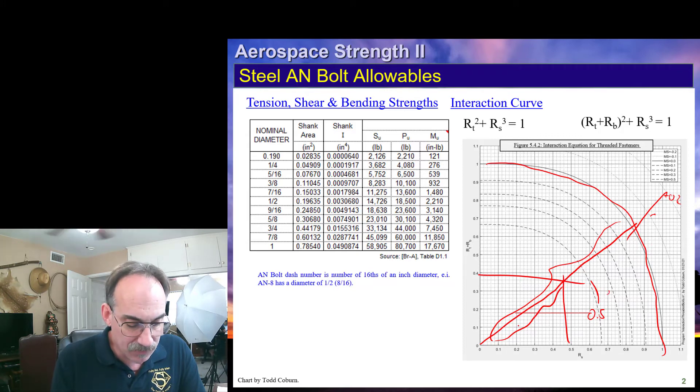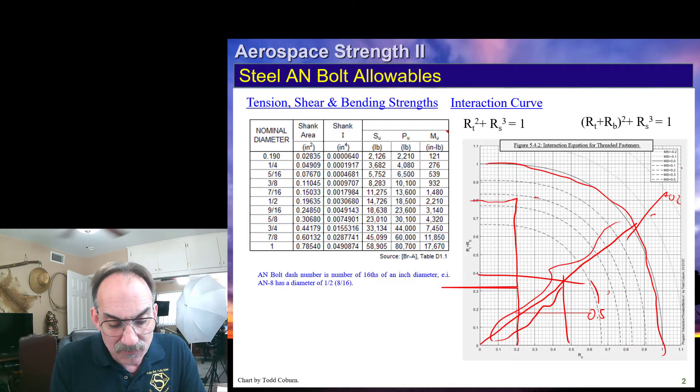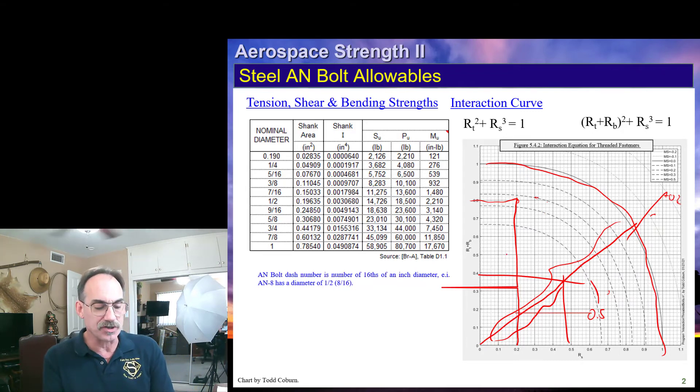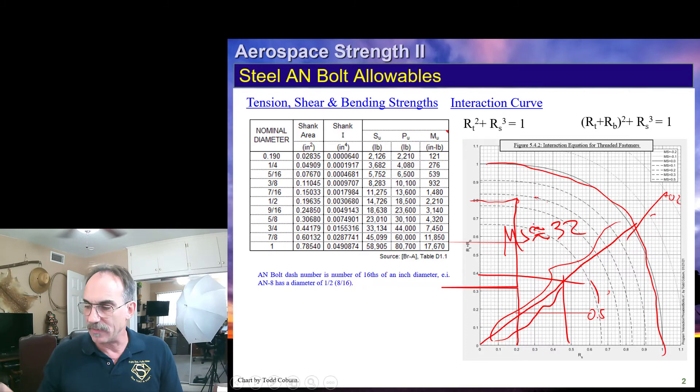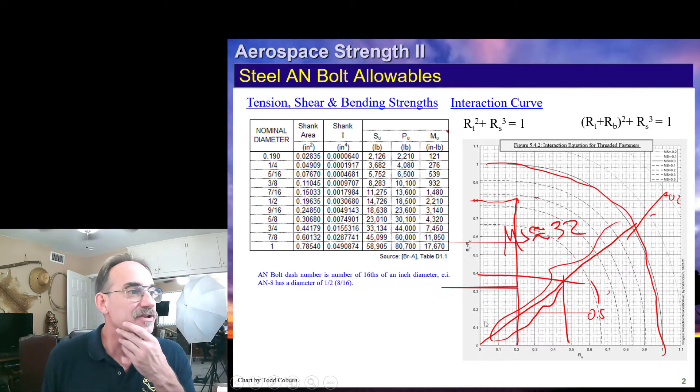Or, for these fasteners, if your margin of safety is between the 0.5 margin of safety and minus 0.2, then you can actually just read it off the curve. For example, if we have a 0.2, 0.8, that looks like that's about a, let's see, this curve is 0.2, this one is 0.3, which means it looks like it's about a 0.32 margin of safety. So that's how we deal with AN bolts.